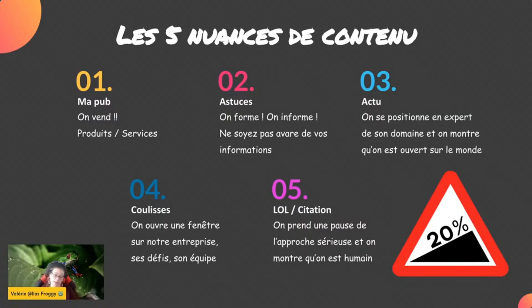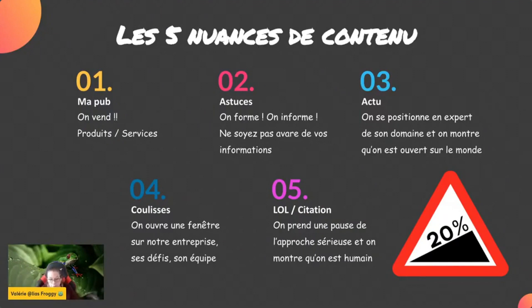tu vas faire cinq actus, cinq coulisses et cinq lols. Puis tu vas les répartir sur ton mois et tu peux utiliser des outils de publication pour les répartir au fil du mois. Utilisez 20% de chacune des catégories.